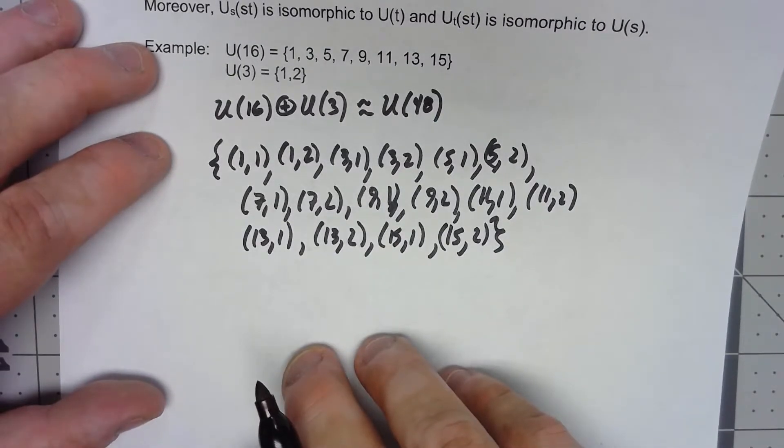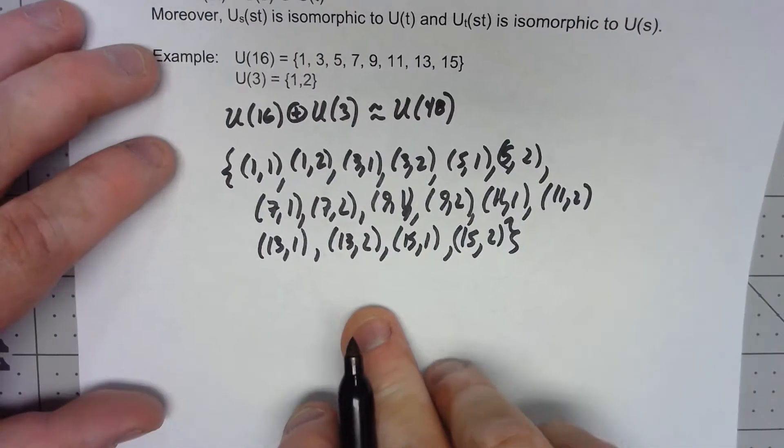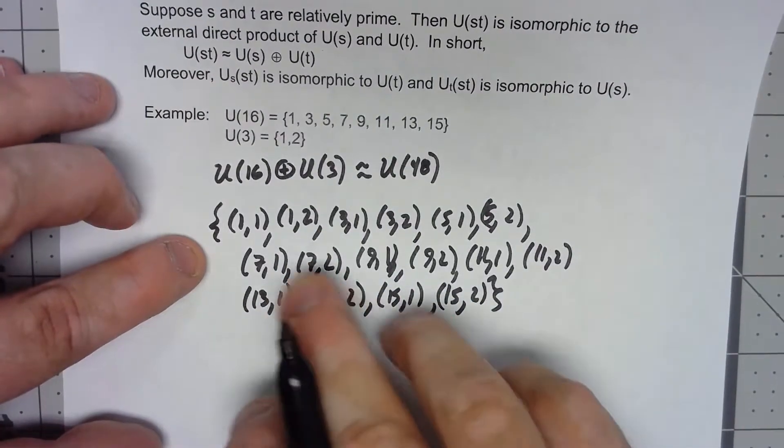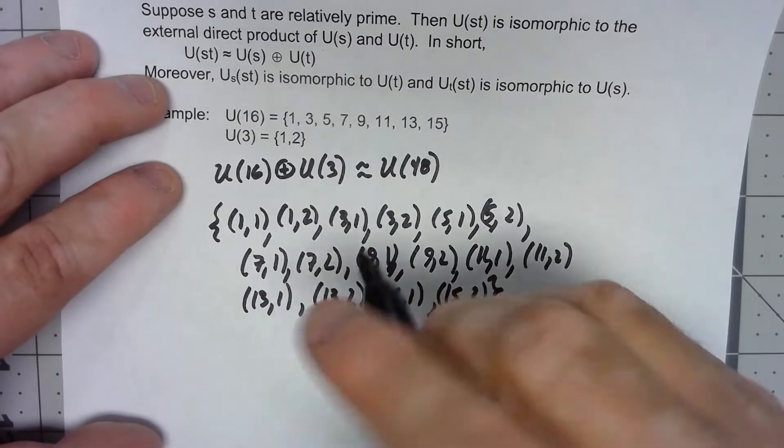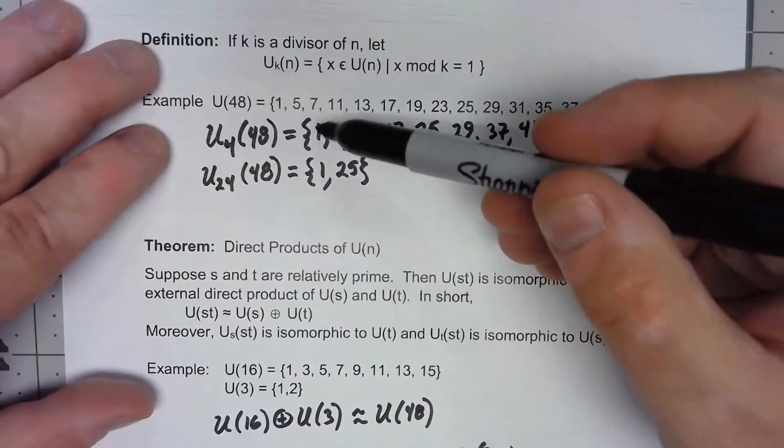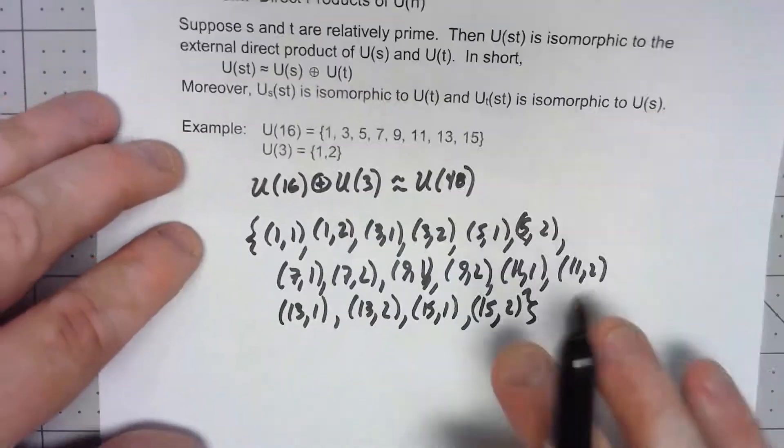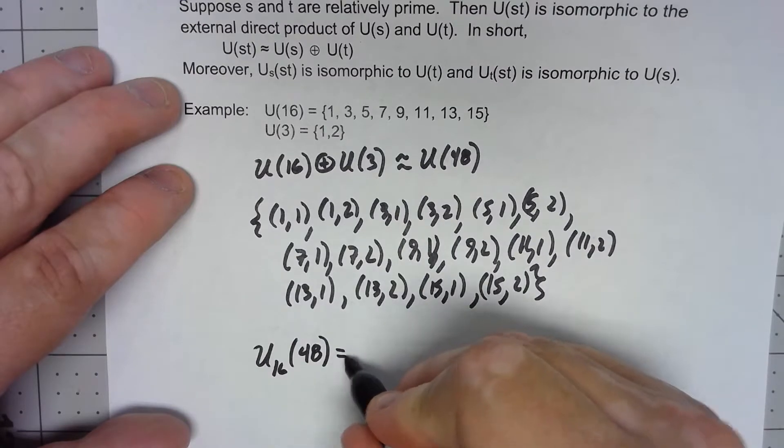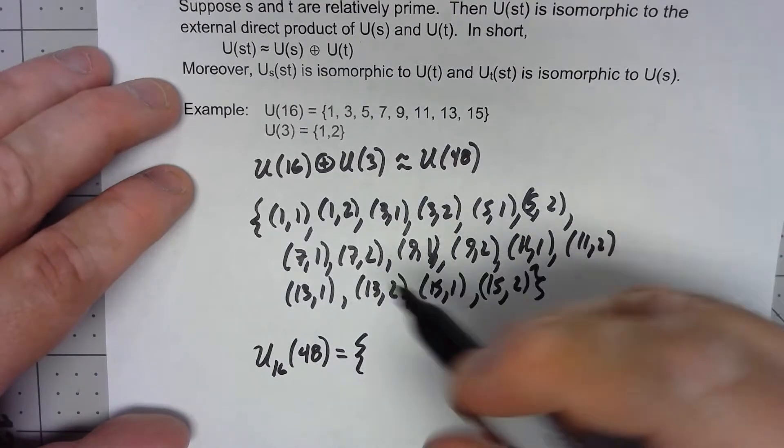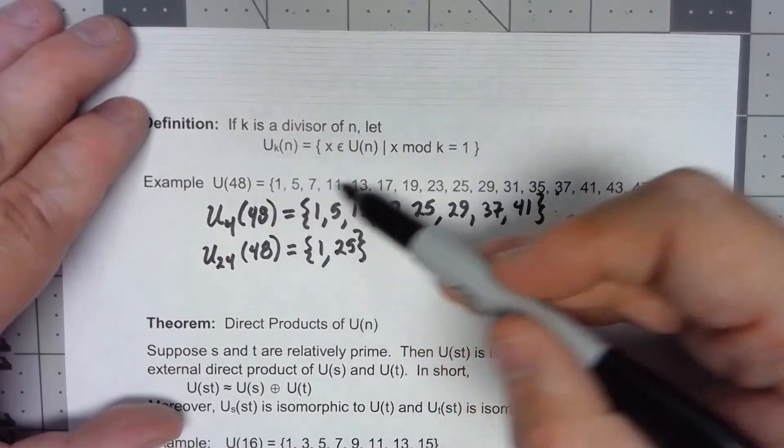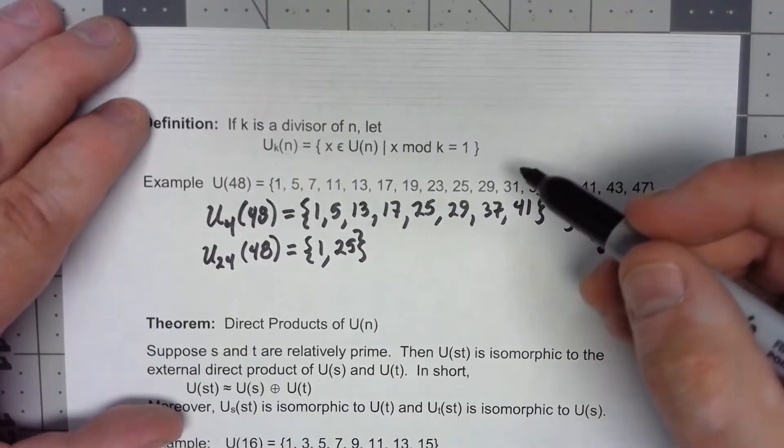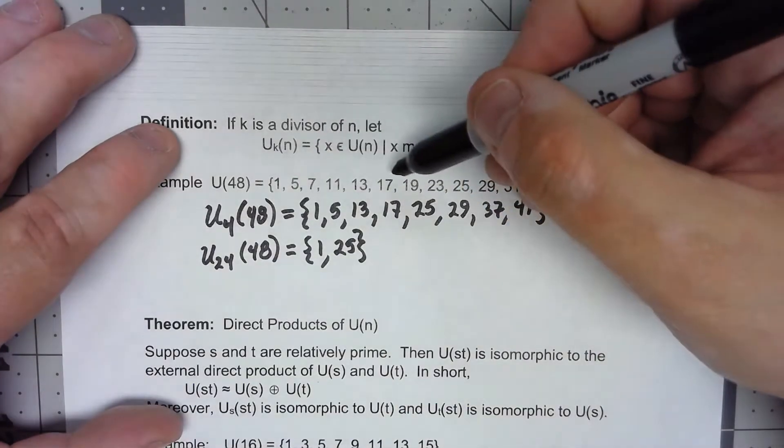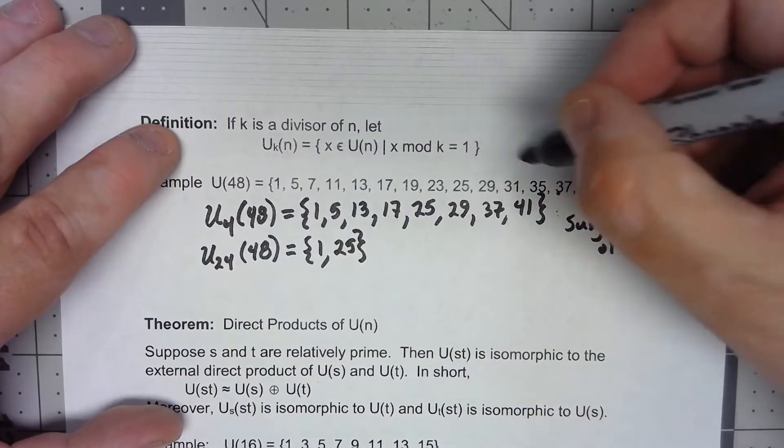Now moreover what we're going to claim is that there is a subgroup of this. If I take this U_s of st, so if I take the U(48), if I do something like U_16(48), that's going to give us the group. So we're looking for the things in here that mod 16 are equal to 1. That's going to be 1, 17, and let's see, 33 would be in there but it's not in U(48), honestly that's it.